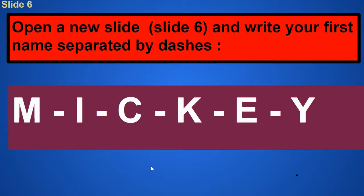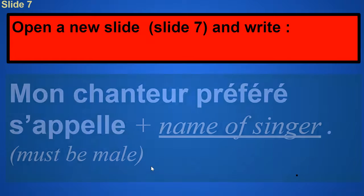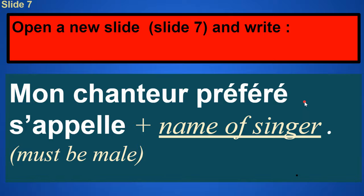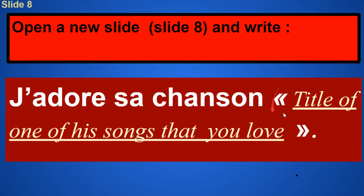After that, we have three slides about your favorite singers and bands. Slide number seven was Mon chanteur préféré s'appelle and the name of your favorite male singer. It needs to be a male. After that, slide number eight was J'adore sa chanson. Open the French quotation mark, put the title of one of his songs that you love, close the quotation mark, period.